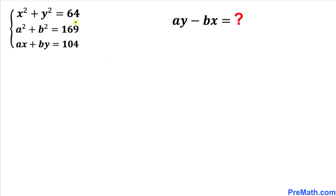In this video we have got this system of equations: x² + y² = 64, a² + b² = 169, and ax + by = 104. Now we are going to find the value of ay minus bx.